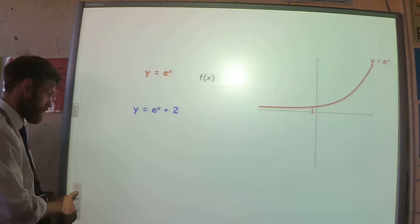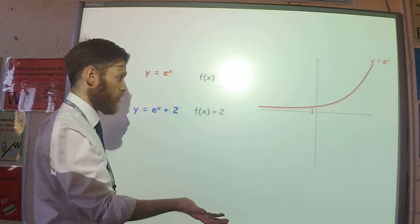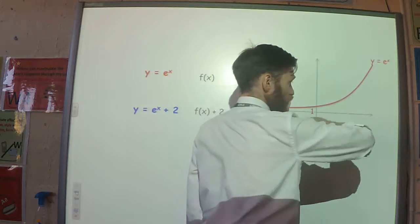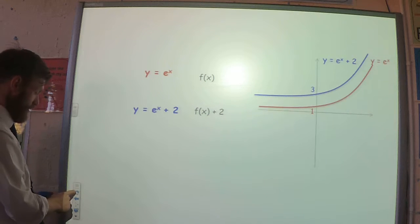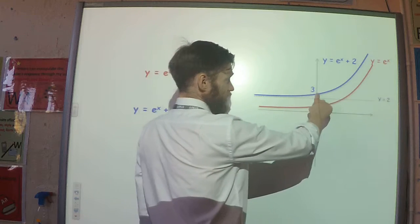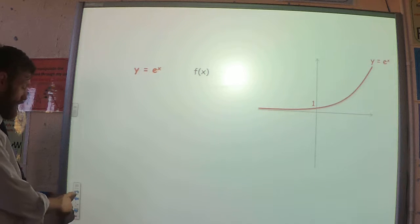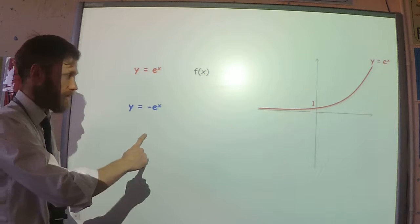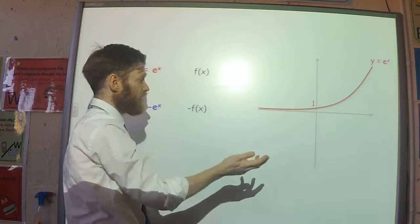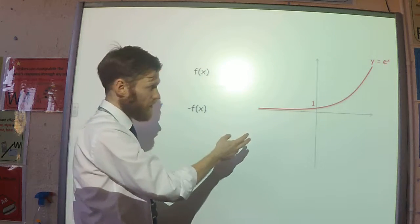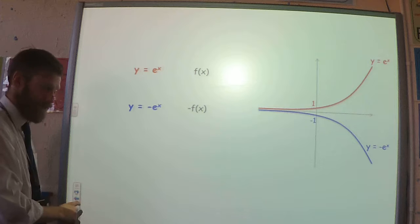What about e to the power x plus 2? That's like the transformation f(x) + 2, which just shifts the whole graph up by 2, including the asymptote. So the asymptote moves from y equals 0 to y equals 2, and it has a y-intercept of 3, because I'm adding 2 to the 1. What about putting a minus in front? That's a reflection in the x-axis — all the y-coordinates become negative — giving a y-intercept of minus 1.